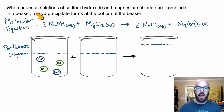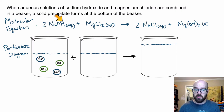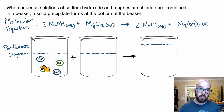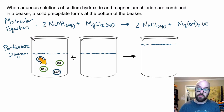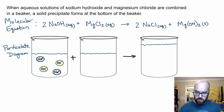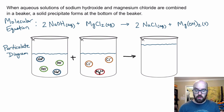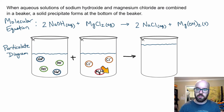I didn't have to include two of each — the important thing is the ratio, that there's the same number of sodiums and hydroxides. I could have done one and one, or three and three. In reality we've got maybe a mole of these reactants, so we're representing it in a simpler way. Over here we've got MgCl₂, so I include one magnesium for every two chlorides — two Cl⁻ and one Mg²⁺ — keeping those ratios equivalent.